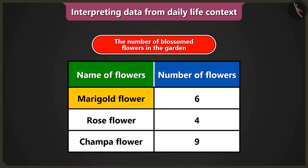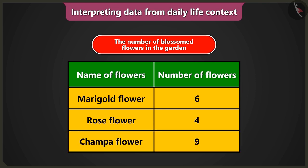First is miracle flower, second is rose flower, and third is chumpa flower. Now read the second column — what is the number of flowers? The number of marigold flowers is six, the number of rose flowers is four, and the number of chumpa flowers is nine. The data collected about the number of blossomed flowers in the garden has been shown in this table.